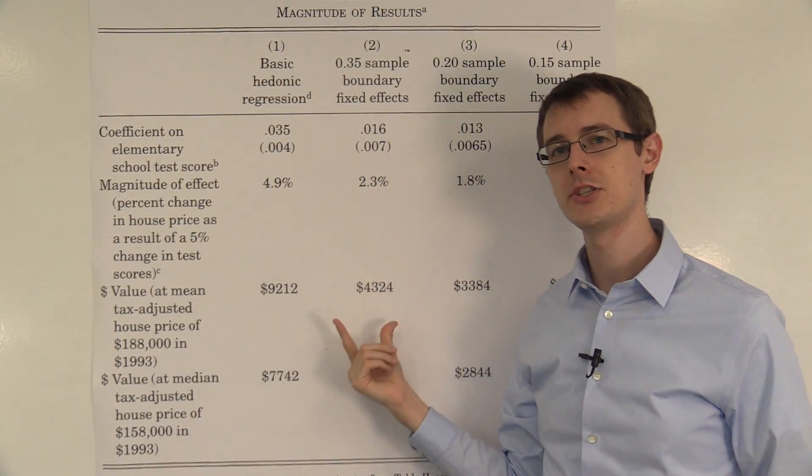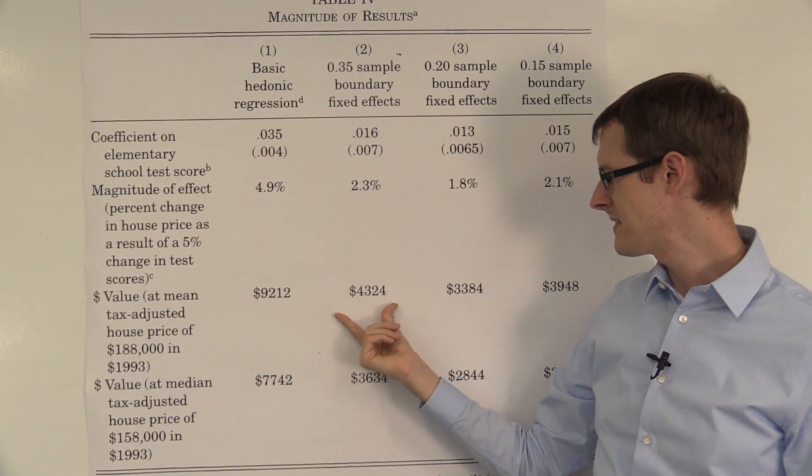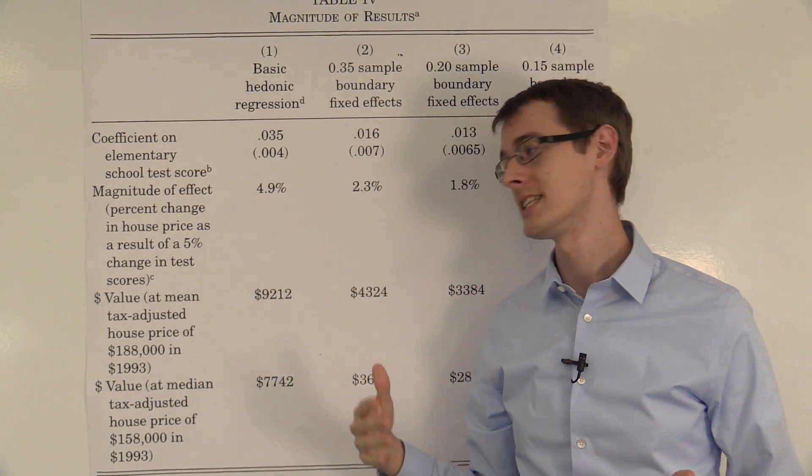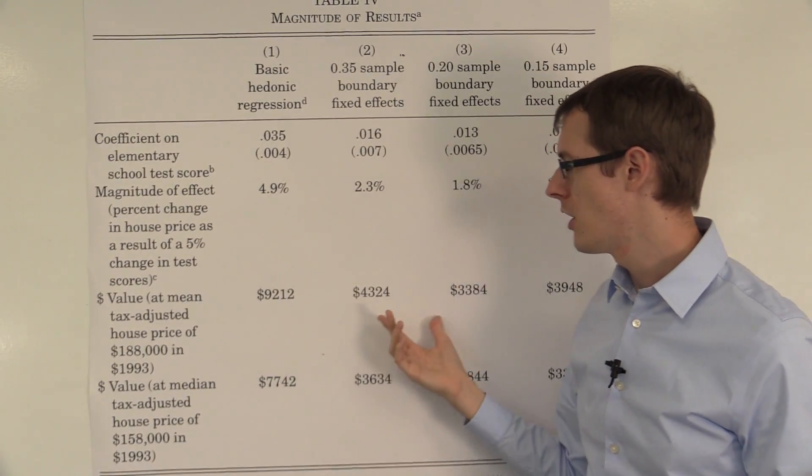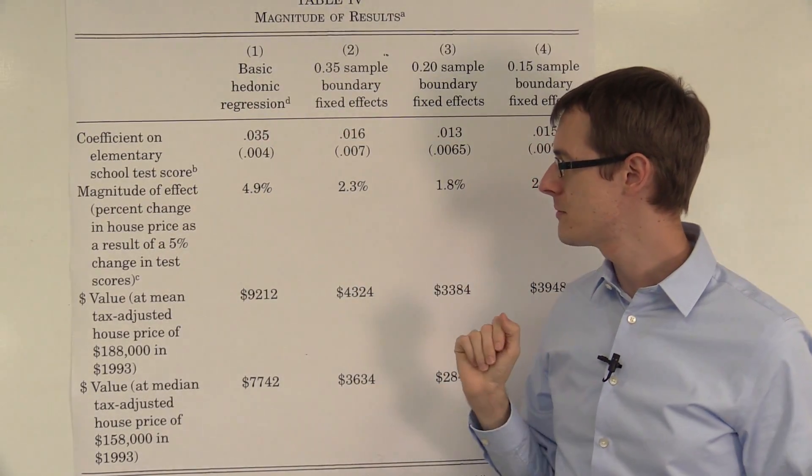And that translates to, if you took a house that was $188,000, something around a $4,000-ish increase in its overall value. So that's the main way that we interpret economically what these coefficients mean.